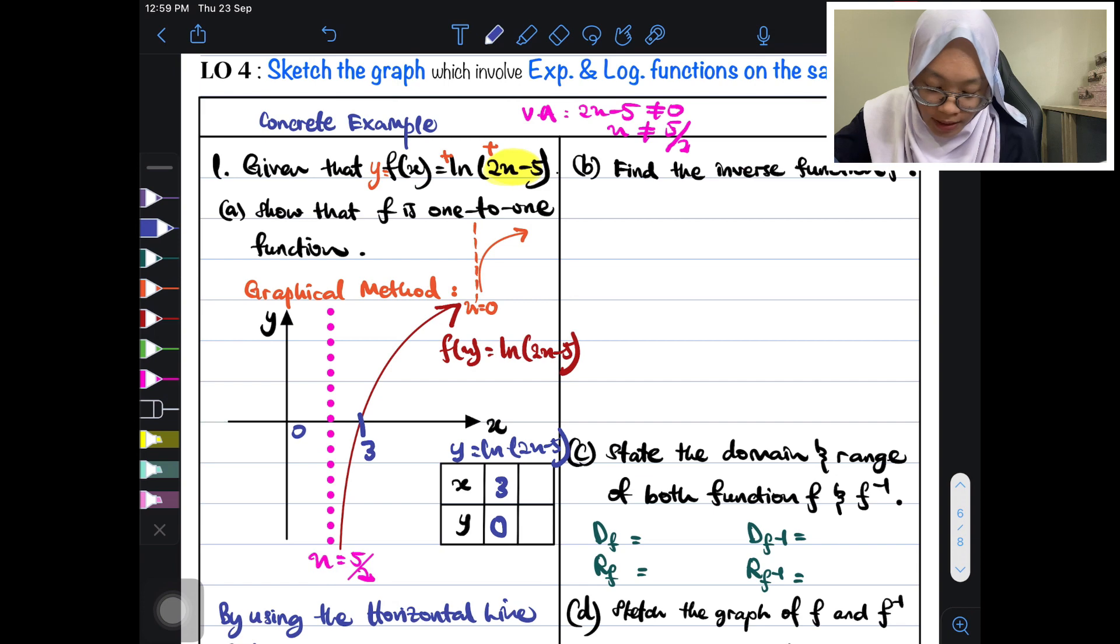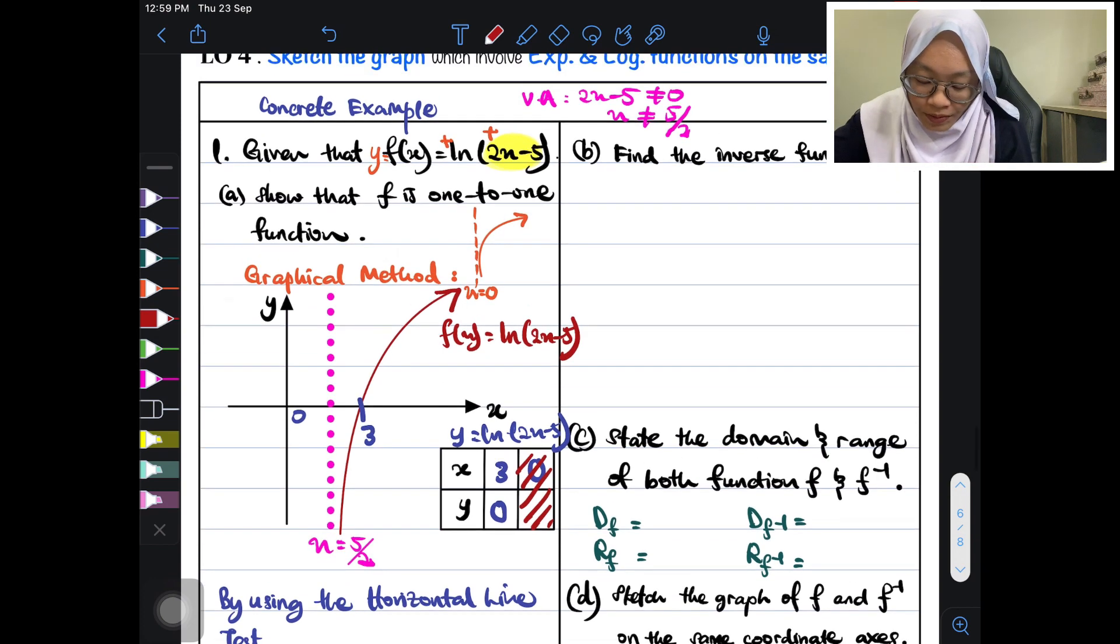Perluka nak cari when x = 0? Kalau x = 0, ada tak graph kamu bahagian x = 0? This is x = 0 guys. Ada tak graph kamu warna merah dekat area sini? Tak ada kan? Kalau tak ada, janganlah kira. Just cancel it out. No need to find if there is no graph at there. So now, dah settle.